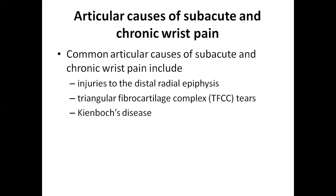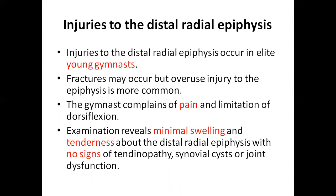Now the articular causes of subacute and chronic wrist pain include injuries to the distal radial epiphysis, triangular fibrocartilage complex tears, and Kienböck's disease. The previous pathologies — impingement syndromes, intersection syndrome, de Quervain's syndrome — were all extra-articular causes. These three are articular causes. Injury to the distal radial epiphysis is a really common injury in elite young gymnasts in the developmental stage. Fractures may occur, but injury to the epiphysis is more common, and gymnasts complain of pain and limitation of dorsal flexion.